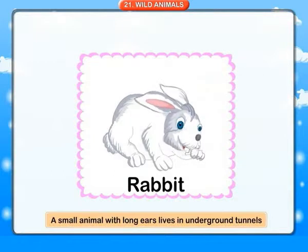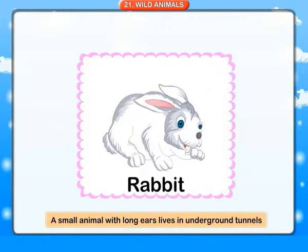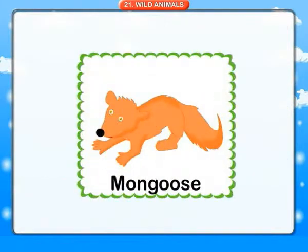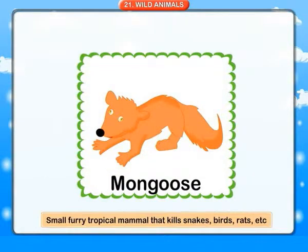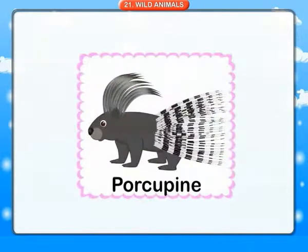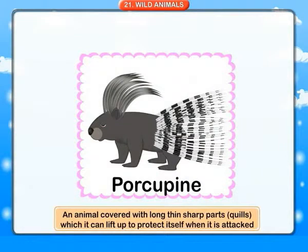Rabbit: a small animal with long ears, lives in underground tunnels. Mongoose: a small furry tropical mammal that kills snakes, birds, rats, etc. Porcupine: an animal covered with long thin sharp parts called quills, which it can lift up to protect itself when it is attacked.